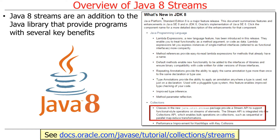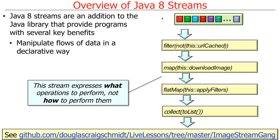What are streams? They were something added to Java and the Java class library that provide a number of benefits to programs. This was added in the 2014 timeframe. One of the things you can do with a stream is manipulate flows of data in a declarative way. Recall when we talked about functional programming — it's really about composition of functions. If you do it right, the input of one function or stage is based on the output of the stage that came before it, composed together in a pipeline. The stream will be used to express what operations to perform, not specifically how to perform them. That's done by the framework under the hood.